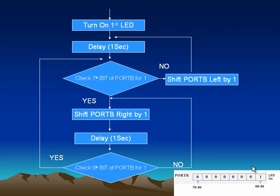Here you can see the flowchart of our project — the Knight Rider design algorithm. It is very important to create this kind of flowchart before implementing microcontroller projects, because it helps us easily plan our tasks. After creating a correct flowchart, it is very easy to implement the project using a programming language like C or assembly.